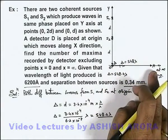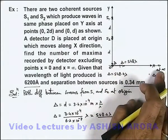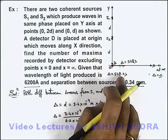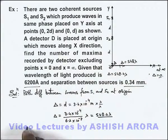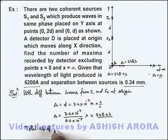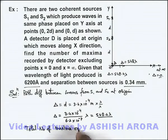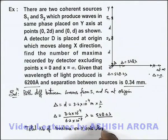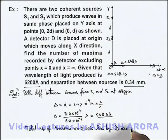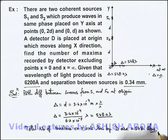So counting all the maxima excluding point infinity and at point x = 0 where maxima is not there, we can write: total number of maxima on x axis recorded by detector are equal to 548. That'll be the answer to this problem.